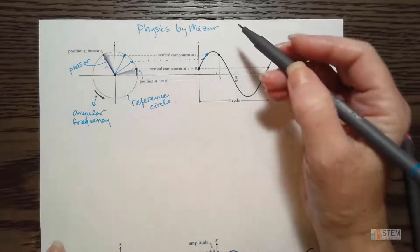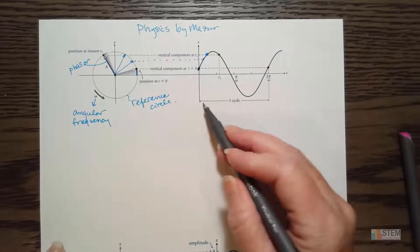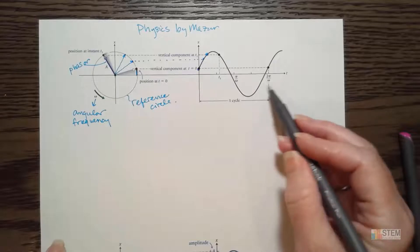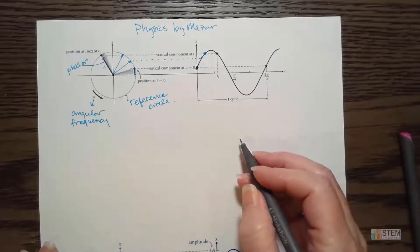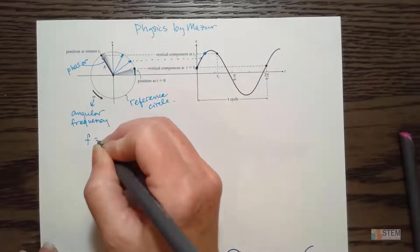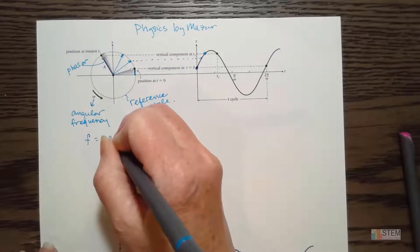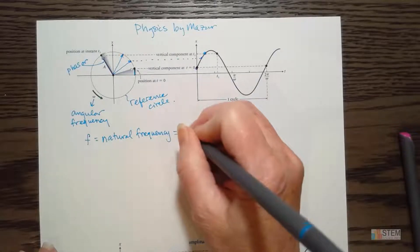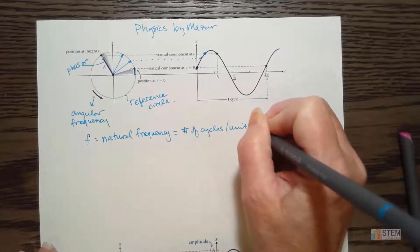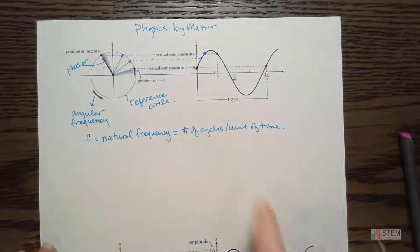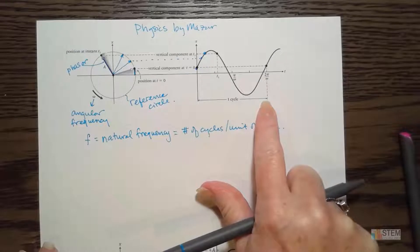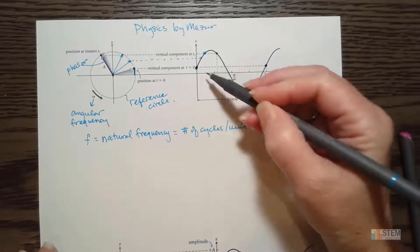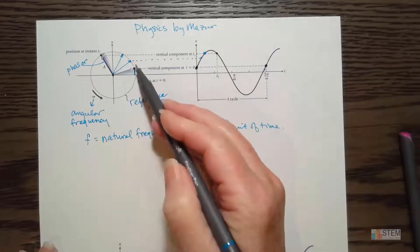Notice we've got some other things listed here — it says one cycle and then we've got pi over omega, two pi over omega. Let's define some terms. First, f is your natural frequency — it's the number of cycles per unit of time. This is one cycle because we start here at this point and end up at the same vertical height on the reference circle.